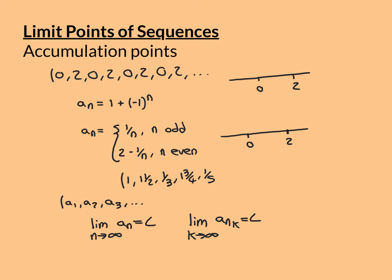If the overall sequence converges to l, any subsequence also converges to l. The reason comes from the epsilon definition of the limit: for any epsilon, you can find a term in the sequence such that that term and all terms beyond it are within epsilon distance of l. Therefore, all terms of the subsequence beyond that point in the original sequence are also within epsilon distance of l, so the subsequence meets the criterion for converging to l.